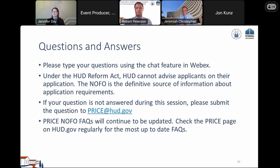Q: What is the opportunity number on Grants.gov for the Price Pilot? A: The grant opportunity number is the same for both Price Main and the Price Replacement Pilot: FR-6700-N-99. That's FR, dash 6700, dash N, dash 99.